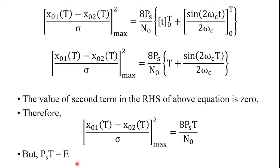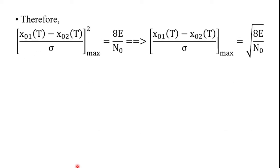Since the energy of the signal E = Ps · T (power multiplied by the duration of the signal), substituting Ps · T = E gives: [x01(t) − x02(t)] / σ² = 8E / N0. Taking the square root on both sides: [x01(t) − x02(t)] / σ = √(8E / N0).